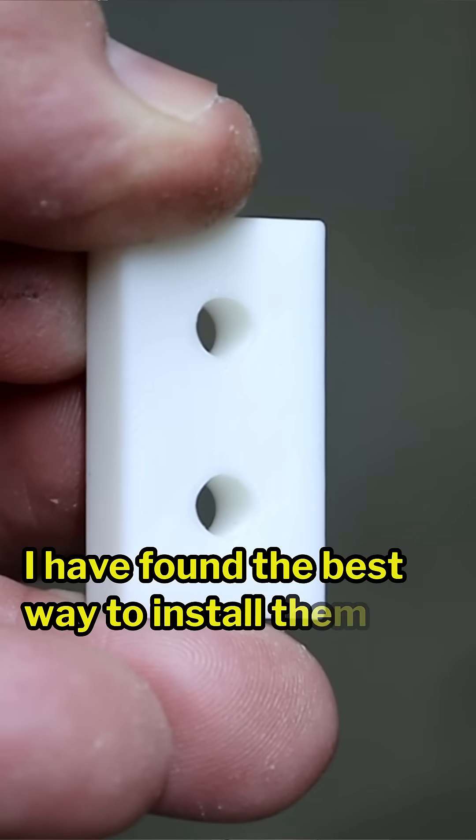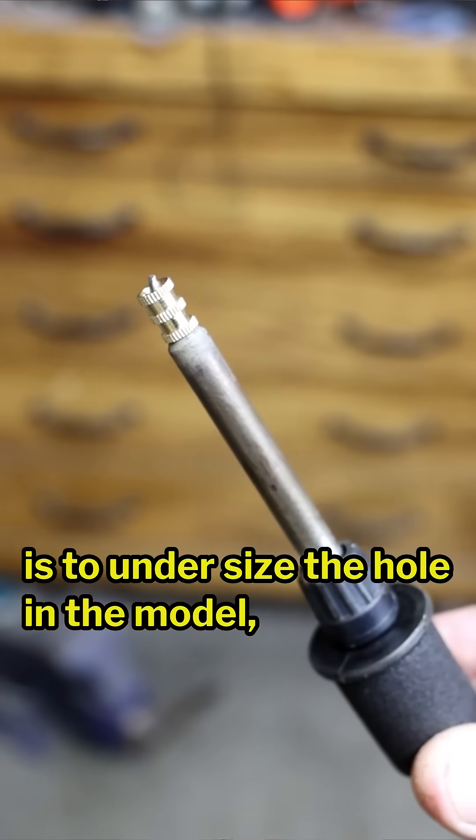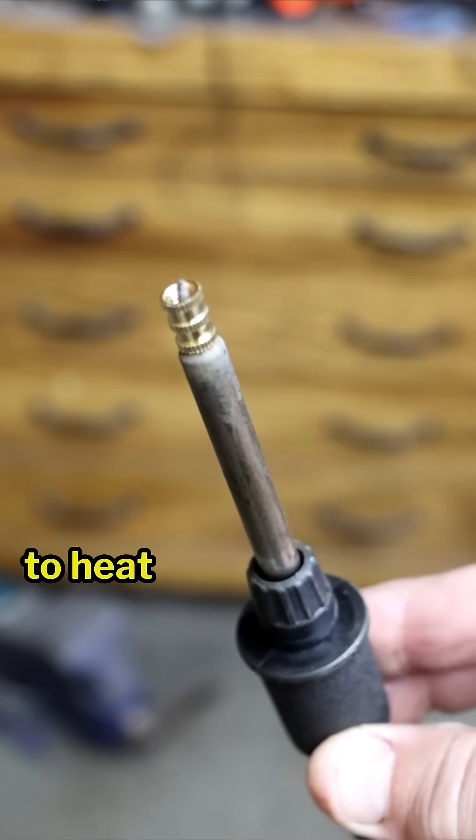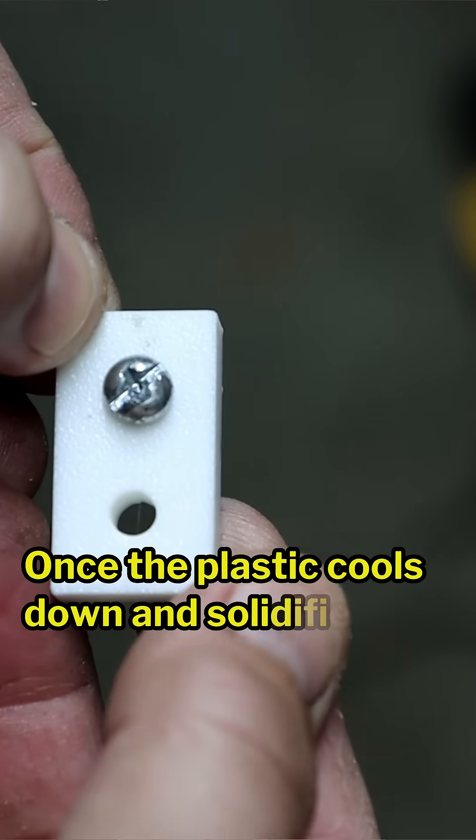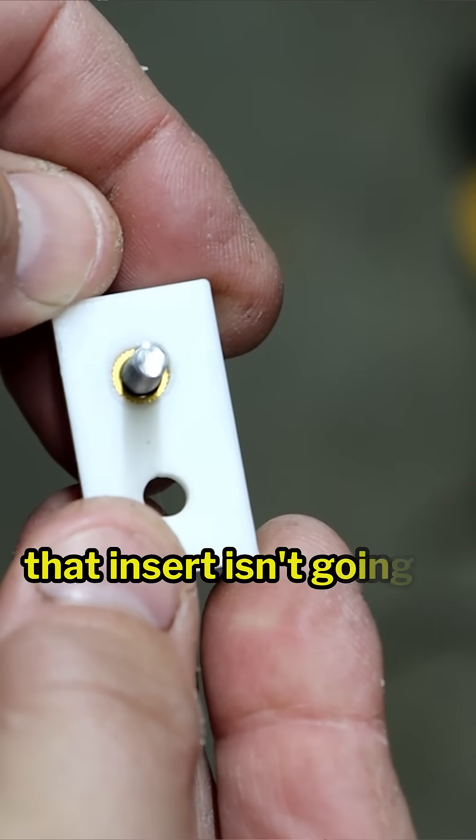I have found the best way to install them is to undersize the hole in the model, then use a soldering iron to heat up the insert and push it into the hole. Once the plastic cools down and solidifies, that insert isn't going anywhere.